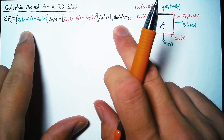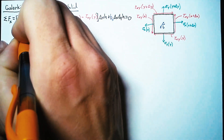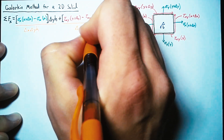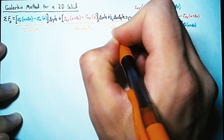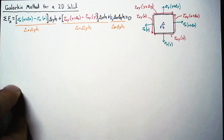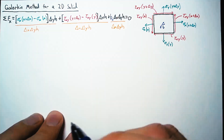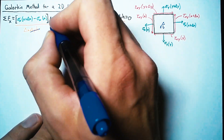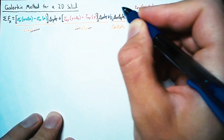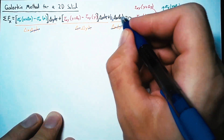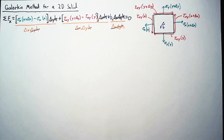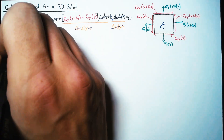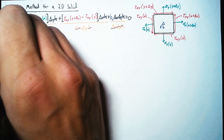To simplify, we divide through by the volume delta x, delta y, h. In the first term, the delta y and h cancel. In the second term, the delta x and h cancel. In the third term, the entire volume cancels. Now let's run through the same thing for y.